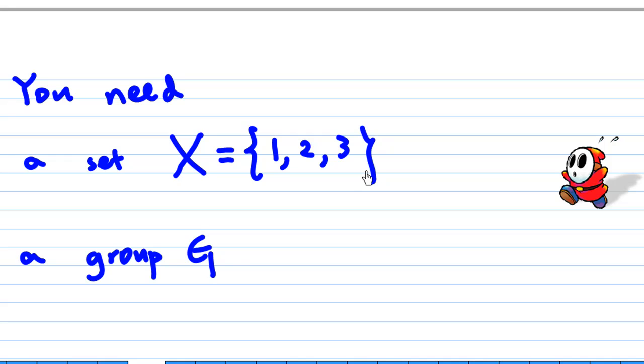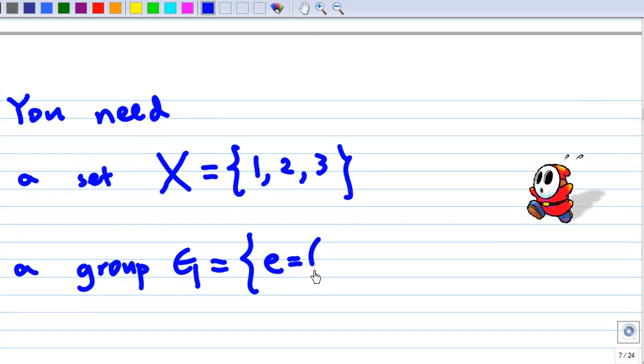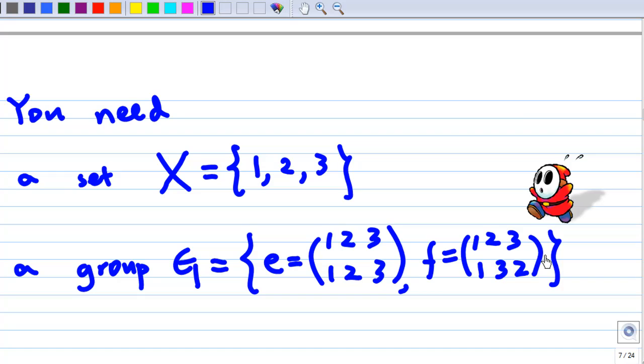And a simple group. A simple group consists of identity e, which is 1, 2, 3, 1, 2, 3 in a two-line form and f, 1, 2, 3, 1, 3, 2 in a two-line form. So this G is a permutation group of three symbols.